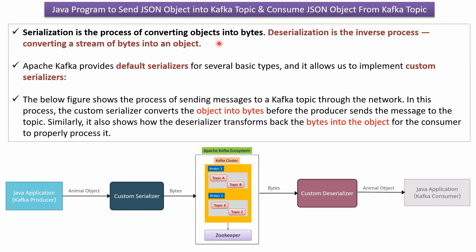Serialization is the process of converting objects into bytes. Deserialization is the inverse process, which is converting a stream of bytes into an object. Apache Kafka provides default serializers for several basic types, and also allows us to implement custom serializers.